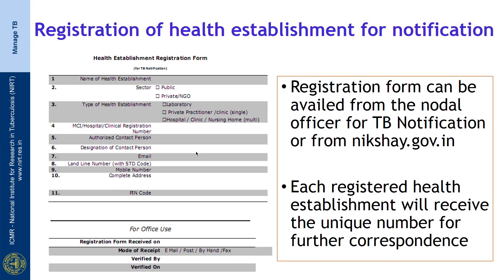What are the steps? The first step is to register as a health establishment for notification. It can be done directly — the form is available on the nikshay.gov.in portal. Each registered health facility or establishment will receive a unique number for further correspondence.